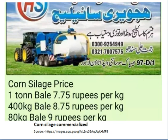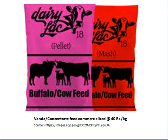Feed is a full-fledged commercial business. As an example, corn silage is available commercially — you can see the price is around 7 rupees per kilogram for a 110 kg bale, approximately 9 rupees per kilogram for an 80 kg bale. This is an example of cattle feed from a commercial company called Dairy League, which makes pellets and mash feed. The cost is around 40 rupees per kilogram for concentrate feed.